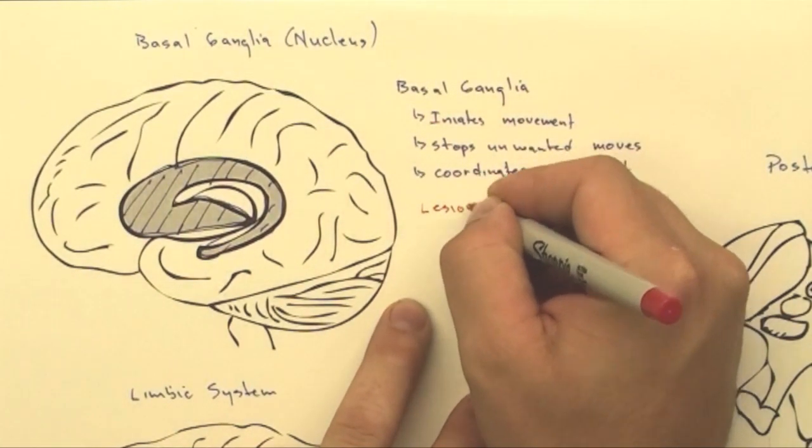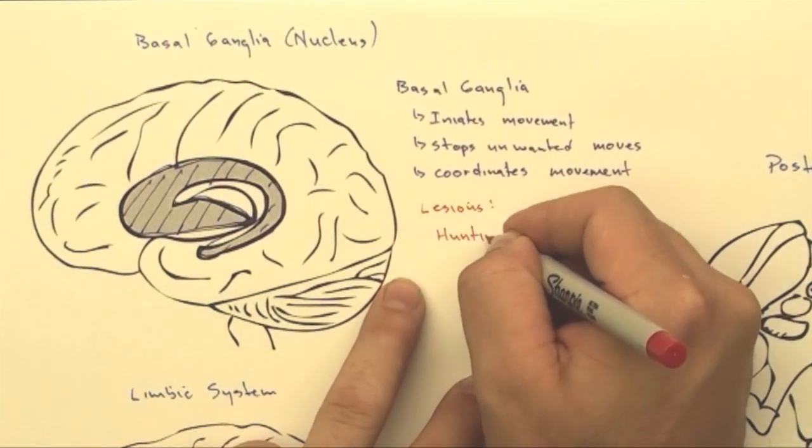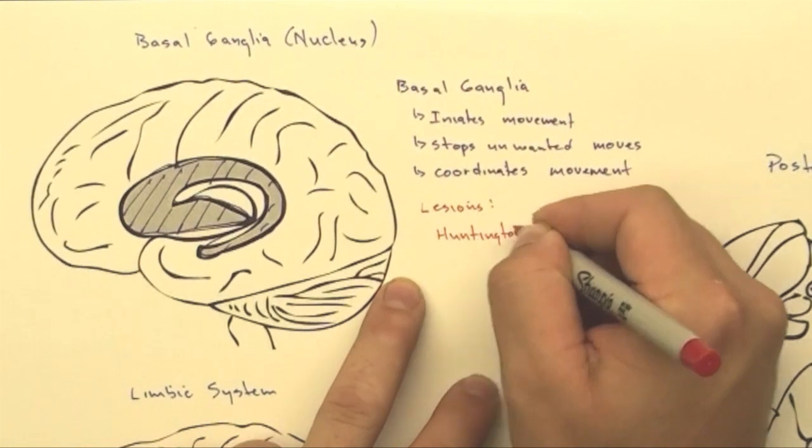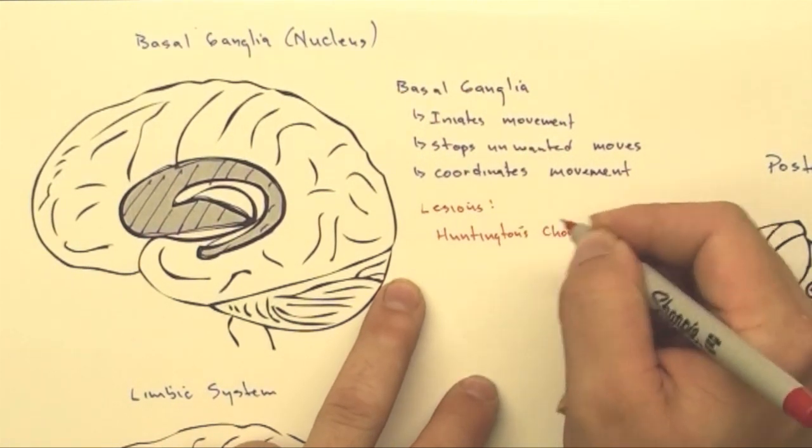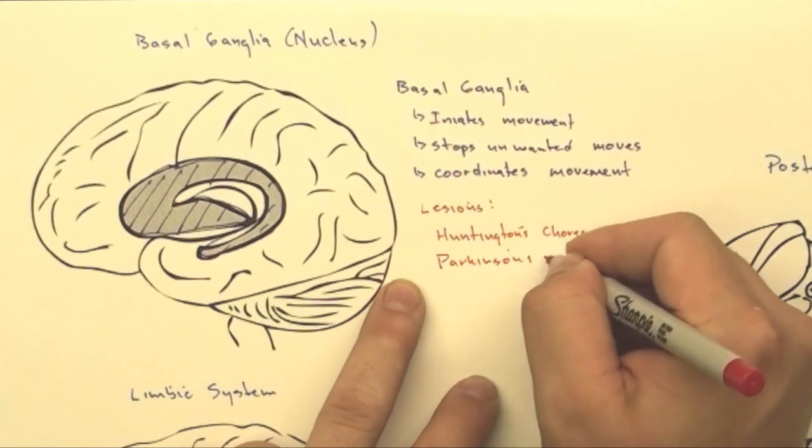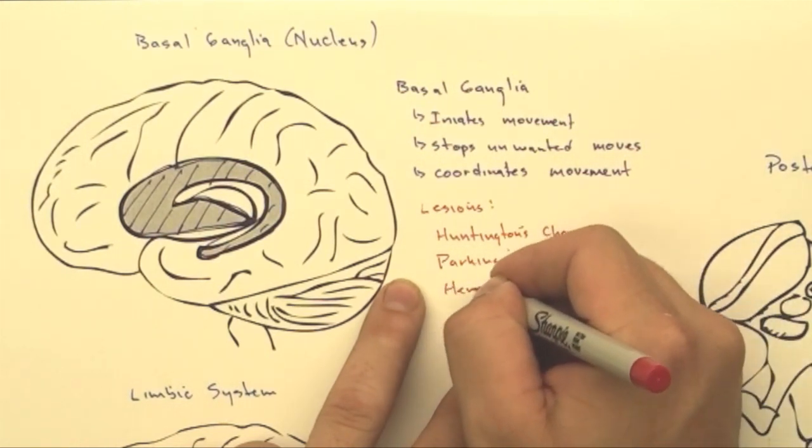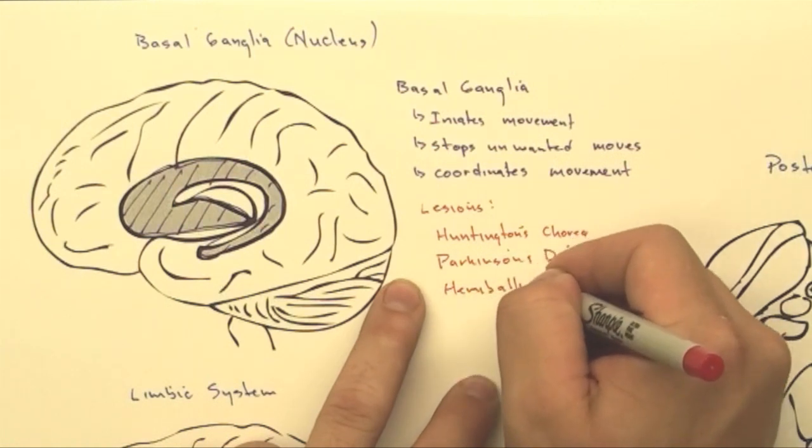Probably the best way to think about this is to think about some lesions and lesions of this are Huntington's chorea, Parkinson's disease, and hemoballismus.